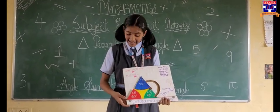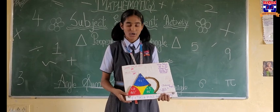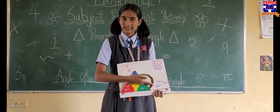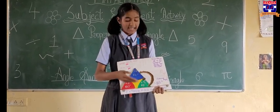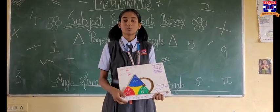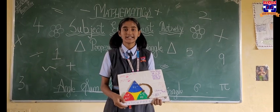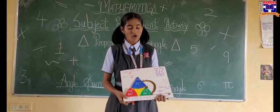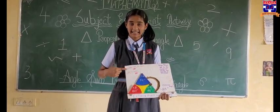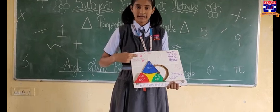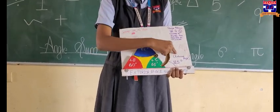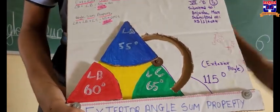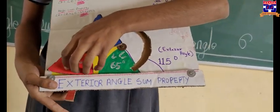First I will show you the exterior angle property. The exterior angle is 115 degrees. Now let's see the formula. The formula is angle A plus angle B is equal to the exterior angle.